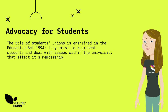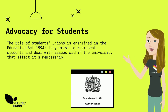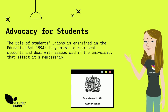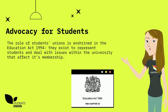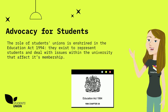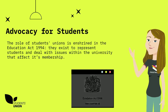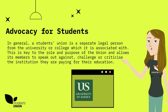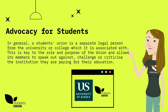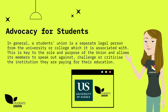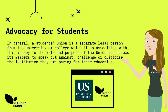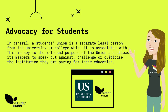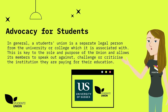The role of students' unions is enshrined in the Education Act of 1994. They exist to represent students and deal with issues within the university that affect its membership. In general, a students' union is a separate legal person from the university or college which it is associated with. This is key to the role and purpose of the union and allows its members to speak out against, challenge or criticise the institution they are paying for their education.